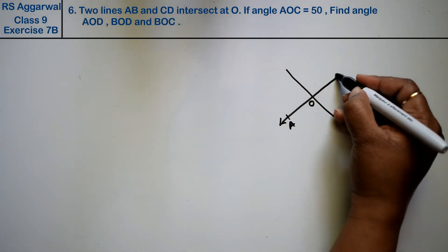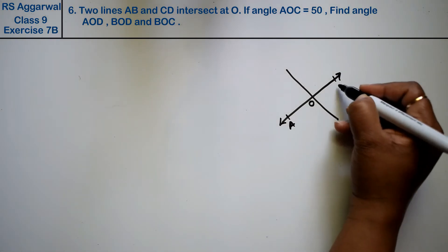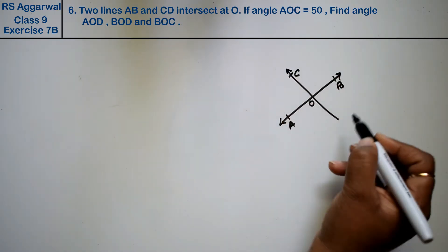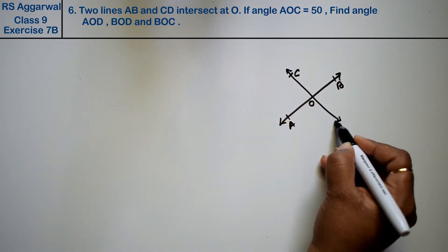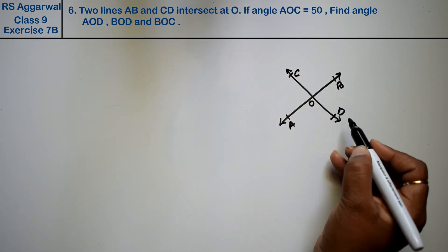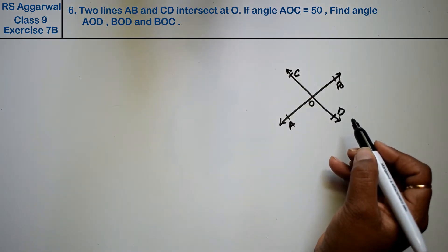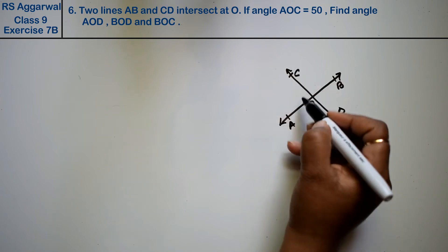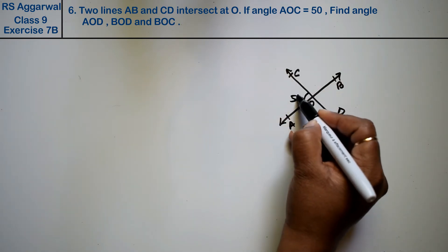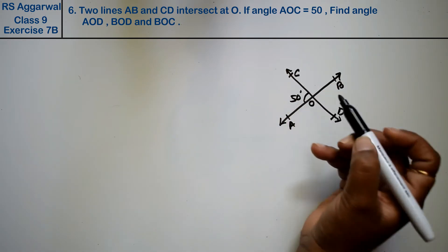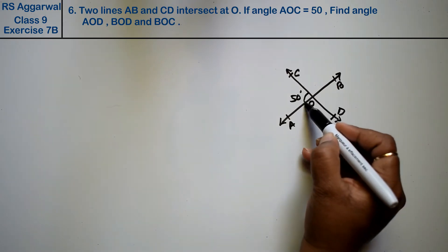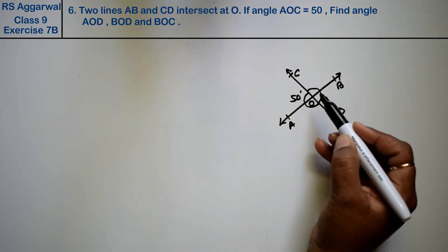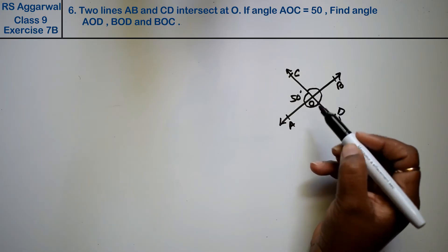Draw the figure as well. If angle AOC is 50 degrees, find angle AOD, angle BOD, and angle BOC — these three angles.